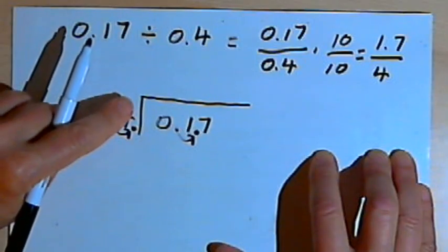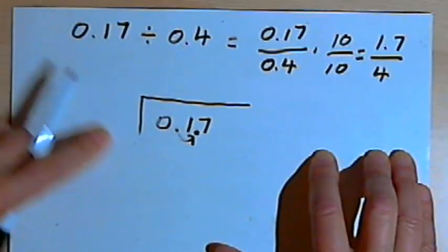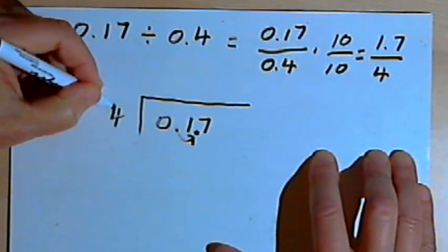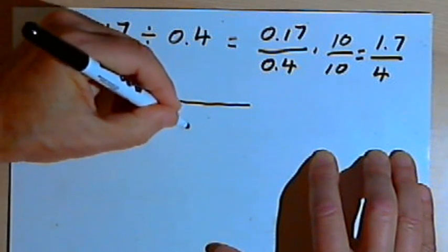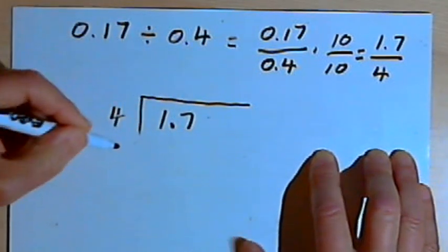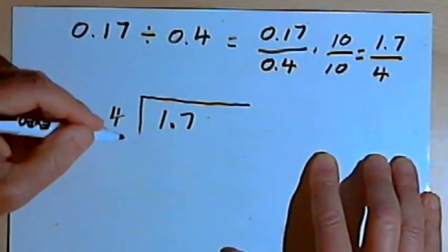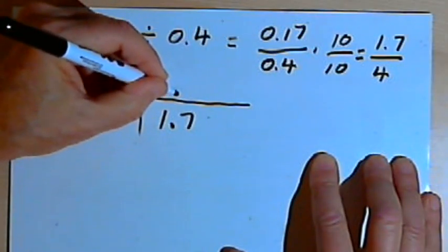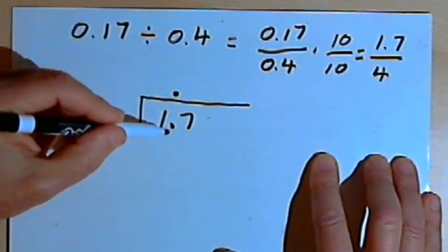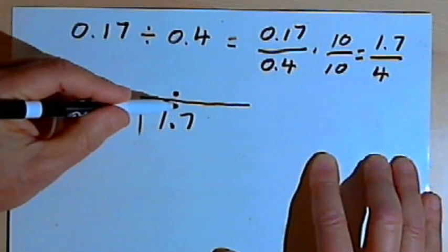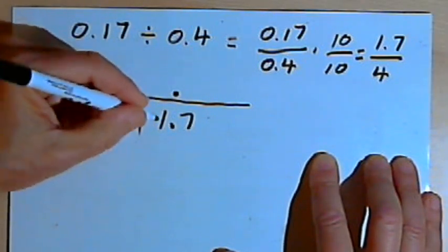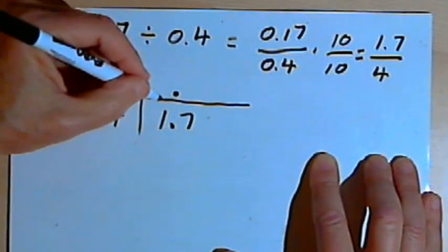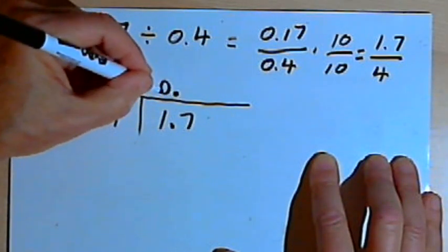So let me just clean this up. I'm dividing 4 into 1.7. Now I know there's going to be a decimal point in the answer, so I'll write a decimal point where the quotient goes above the box directly above the decimal point in the dividend. And now I can start dividing. I want to divide 4 into 1. Well, it doesn't go, so I'll just put a 0 there before the decimal point.